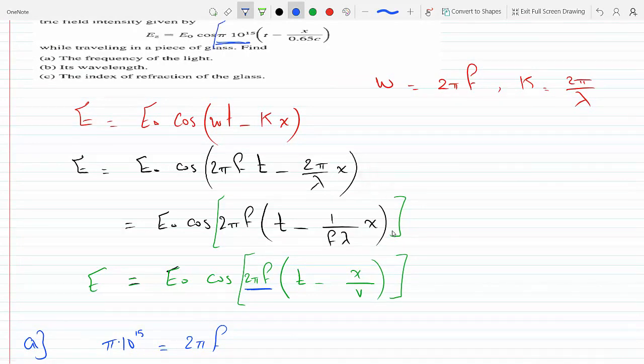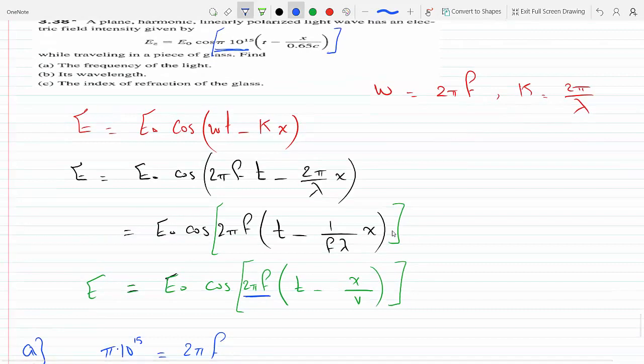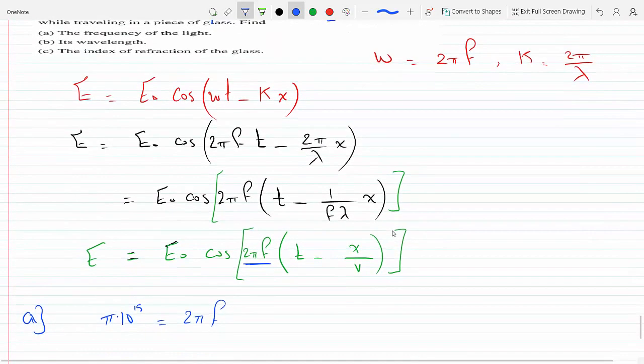Basically this guy here has to equal this guy here. I know they're not clear on that, the bracket is right there. So this becomes 2πf, and so then you get...